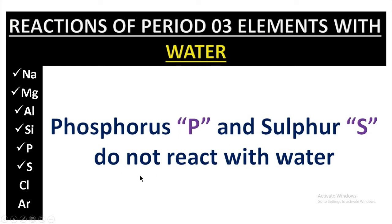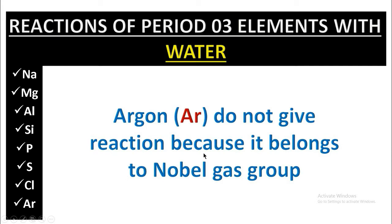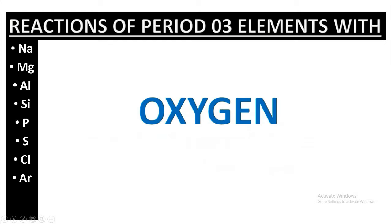Phosphorus and sulfur do not react with water. This is the reaction of chlorine — chlorine gives two reactions with water. Argon does not give a reaction because it belongs to the noble gases group. So this is all about the reactions of water with Period 3 elements.